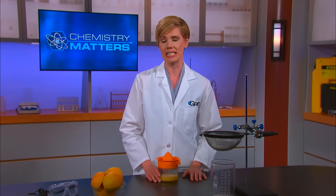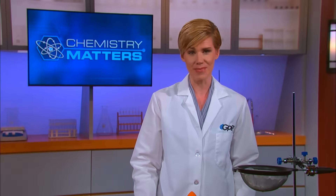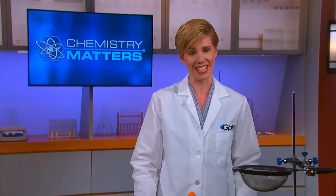Another way to separate water and other liquids is by using distillation. Distillation is the process that separates homogeneous mixtures based on the different boiling points of the substances. It boils the liquid from the other components and then a tube carries the gas off to a place where it can condense. The mixture is heated until the substance with the lowest boiling point boils to a vapor, which can then be condensed into a liquid and collected.